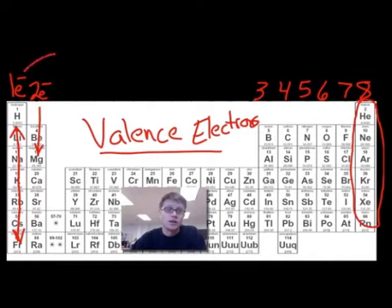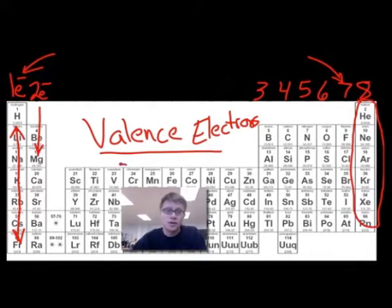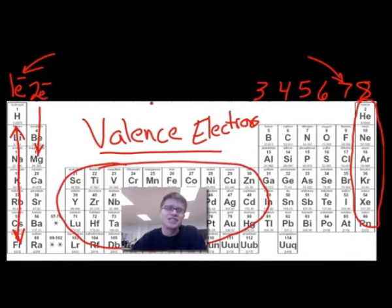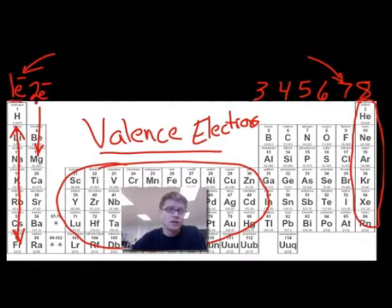Whereas these alkali metals and these halogens right here are incredibly unstable, and then we have kind of a combination in the middle. What you just noticed is that I ignored all of these — the transition metals — and their electron configurations are a little more complex. But please learn this right away: 1, 2, 3, 4, 5, 6, 7, 8 valence electrons. You can't do Lewis dot diagrams unless you know how many valence electrons they have.